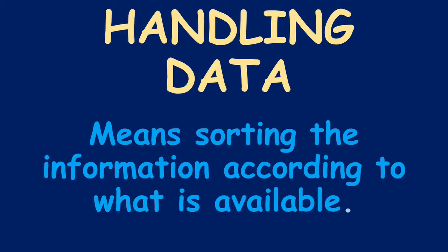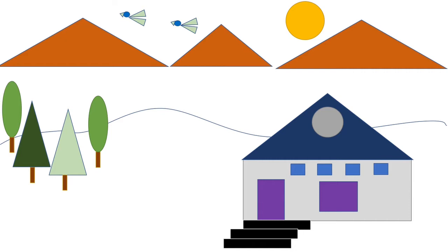Now, let us take an example and learn about it. How we are going to sort when we have data with us. Here, there are a few shapes which we have used and made a scenery out of it. So, what shapes do we have here?